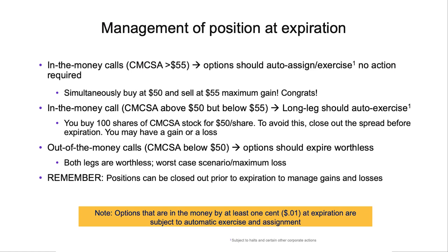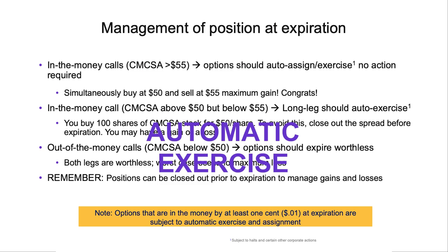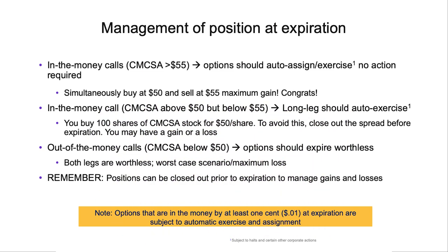There are a couple of really critical points here in trading spreads. Options that are in the money by at least one cent at expiration are subject to automatic exercise and assignment. That's going to be important when we've got both a long leg and a short leg — both a right and an obligation. Let's go through a couple of scenarios at expiration. The first scenario is: what if both legs are in the money? This means at expiration, Comcast is greater than $55. That would mean both the short leg (the 55 call) and the long leg (the 50 call) are in the money — both options should auto-assign and auto-exercise.